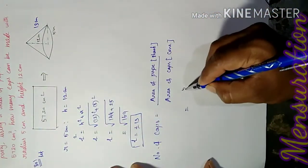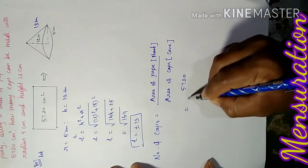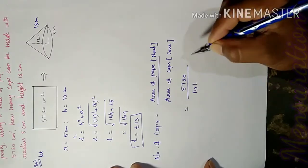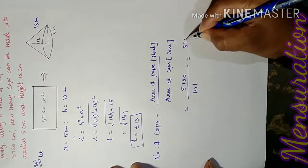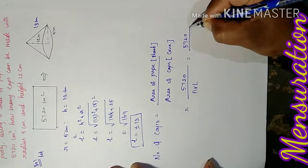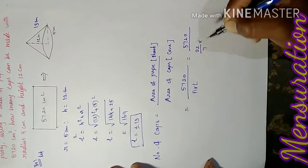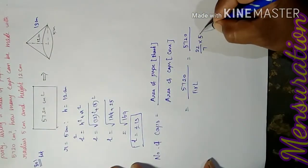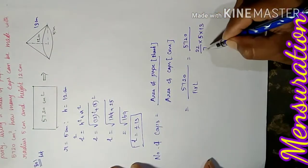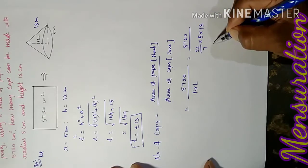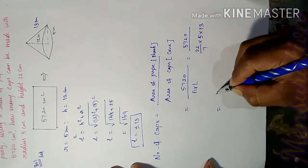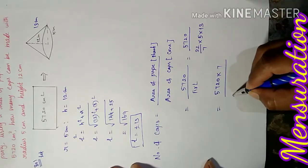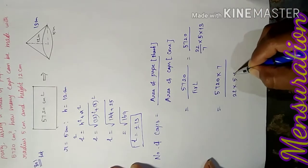Applying the values: 5720 divided by curved surface area equals 5720 / (π × r × L). Substituting: 5720 / ((22/7) × 5 × 13). Rearranging: (5720 × 7) / (22 × 5 × 13).